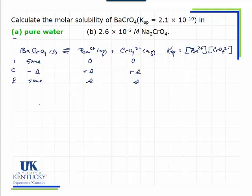Now we can take this expression and plug in what we know. We have 2.1 times 10 to the minus 10 for Ksp, and the barium's concentration is represented by an S.